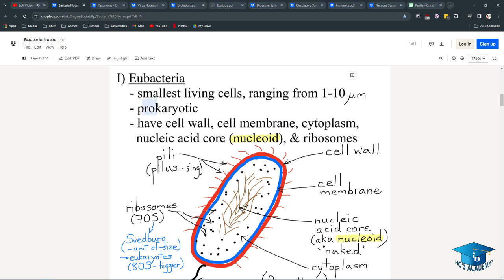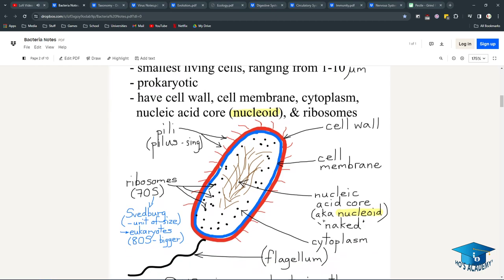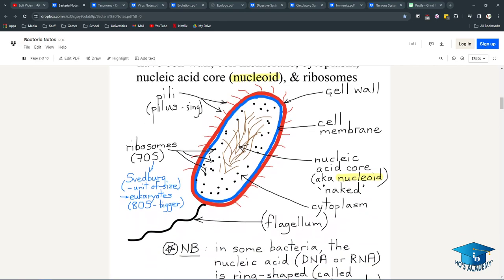They're prokaryotic and have a cell wall and membrane. This includes the capsule, the cell wall outer layer, peptidoglycan cell wall, cell membrane, and then they have pili, which are capable of transferring genetic material.